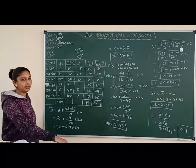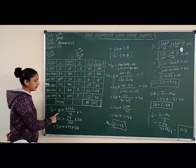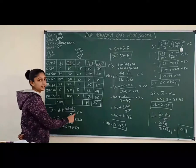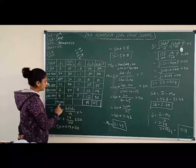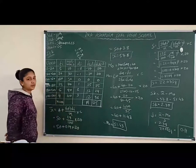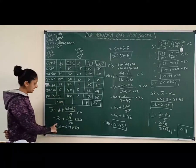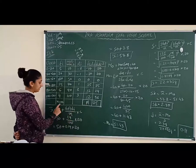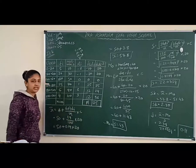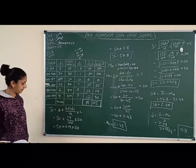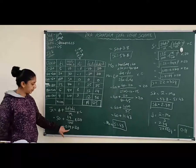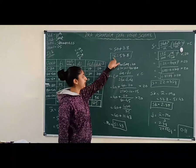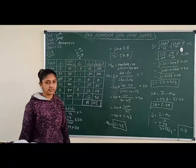Now find x̄. x̄ = a + (ΣFiDi / n) × c. With n = 100, a = 50, ΣFiDi = 19: x̄ = 50 + (19/100) × 20 = 50 + 0.19 × 20 = 50 + 3.8 = 53.8.